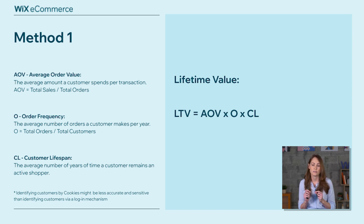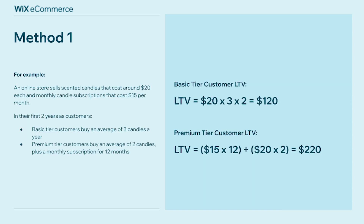One small note: identifying customers by cookies might be less accurate than identifying customers via a login mechanism, so take that into account. Let's put this method to practice. Say you're an online store selling scented candles for around $20 each and monthly candle subscriptions for $15 per month, with a customer lifespan of two years. Basic tier customers buy an average of three candles a year; premium tier customers buy an average of two candles plus a monthly subscription for 12 months. The basic tier lifetime value: $20 × 3 × 2 = $120.